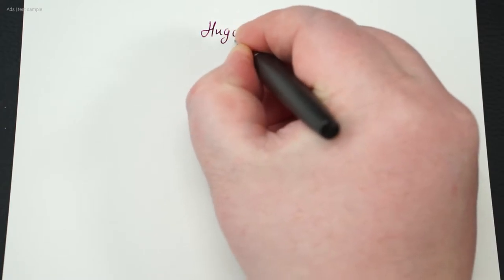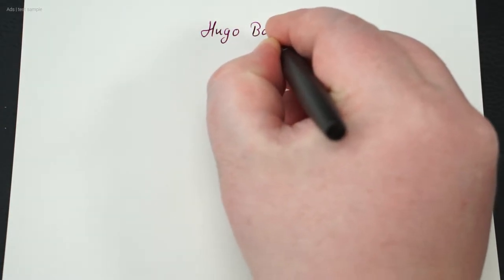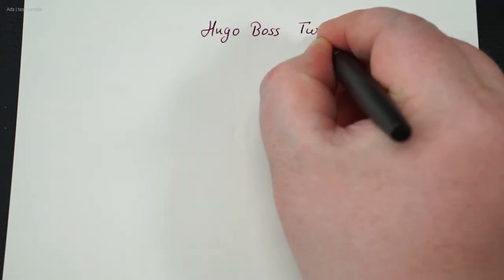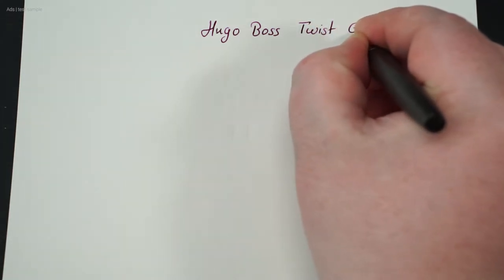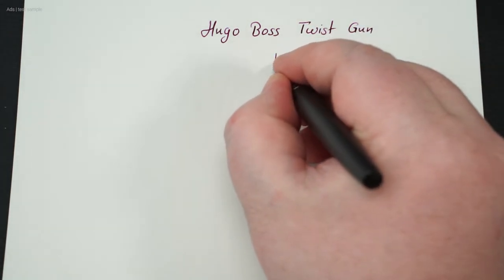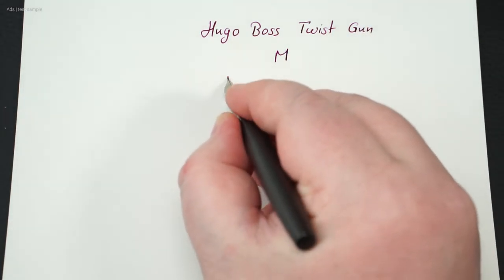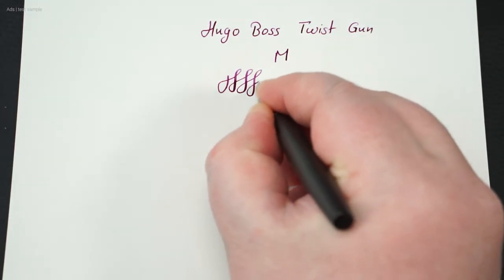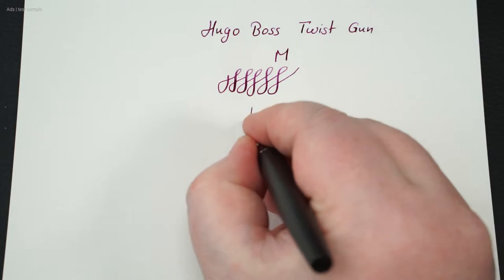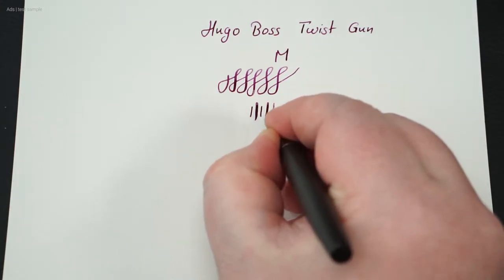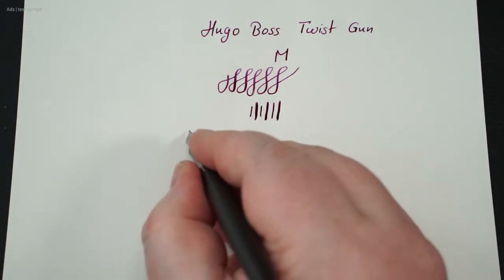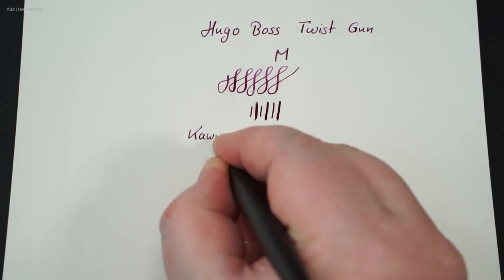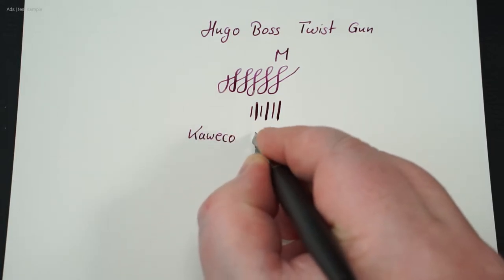The Hugo Boss twist writes well, despite the slightly skewed tip. The nib, which is about medium size, glides well over the paper with light feedback. And it is capable of slight line variance, which is fine by me. By the way, it is filled with Kaweco Summer Purple ink.